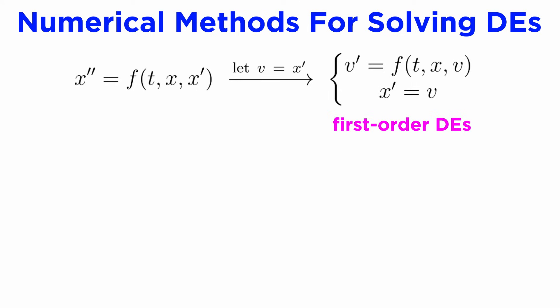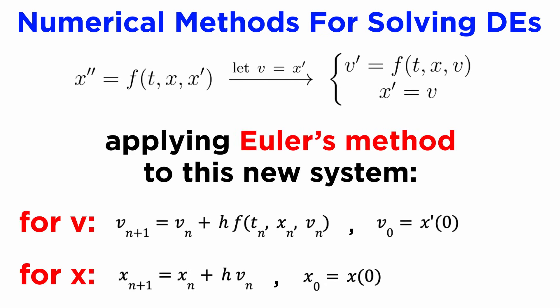It might seem like we've made the problem harder, but note that these are both first-order, and so we can now apply the numerical methods studied here to each equation, stepping through both variables at each point in time, approximating the solution as we go. For example, to apply Euler's method to this system, we calculate the estimates for both v and x at each time step.